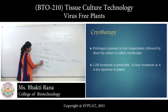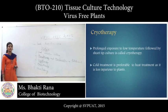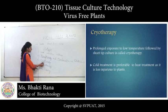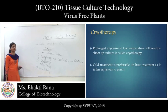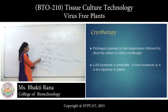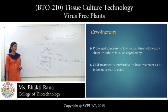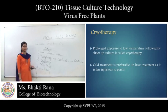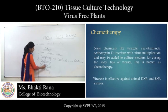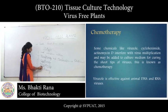Next we have cryotherapy. Cryo indicates very low temperature — you are going to expose the plants at a very low temperature. As in cryopreservation, we use the temperature of liquid nitrogen, that is minus 196 degrees Celsius. If we compare thermotherapy to cryotherapy, cryotherapy is considered better because it causes less injury to the plants compared to thermotherapy.